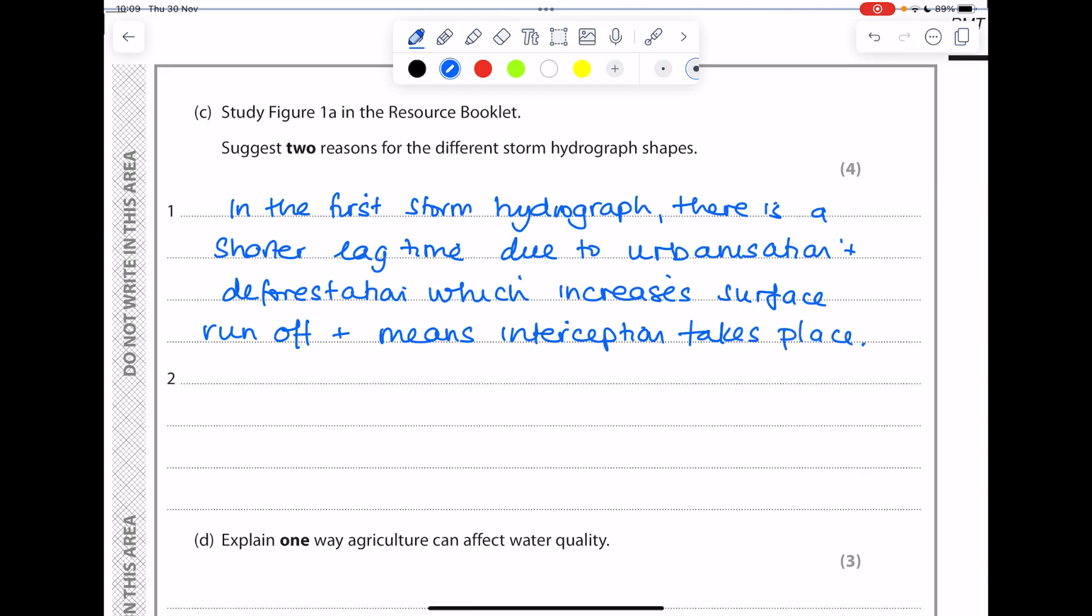What else did we talk about? We said about the rising limb. We could say in the first storm hydrograph, there is a steeper rising limb. So we have that flashy storm hydrograph. And we said that that could be due to there being steep slopes, which increase the rate at which water enters the rivers.